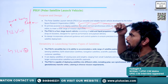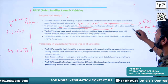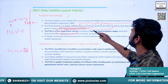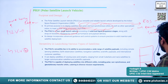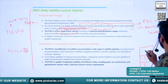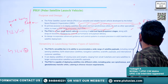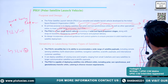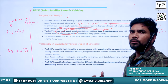PSLV is used to deploy satellites for earth observation as well as other specialized orbits to meet a wide range of mission objectives. It is a four-stage launch vehicle with solid and liquid propulsion stages alternating — first stage solid, second liquid, third solid, fourth liquid. There are also strap-on boosters that can be added to increase capability, ranging from two to six boosters, which also contain solid fuel.